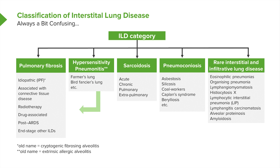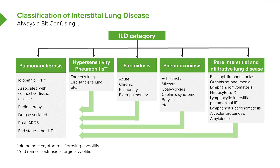A very important component of this diagram are the arrows showing that patients with severe hypersensitivity pneumonitis, severe sarcoidosis, severe pneumoconiosis, and some of the other rare interstitial lung diseases with aggressive severe disease end up with what looks like pulmonary fibrosis at the end. For example, if you have end-stage sarcoidosis, it actually looks clinically and radiologically very similar to end-stage pulmonary fibrosis. As a consequence, sarcoidosis, hypersensitivity pneumonitis, and various pneumoconioses are thought of as causes of pulmonary fibrosis.